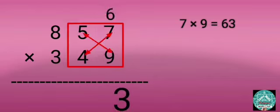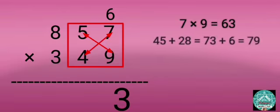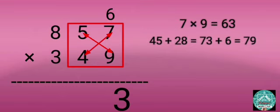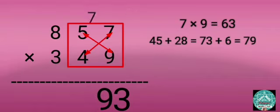Step 2: Multiply 5 by 9 and 4 by 7, then add: 45 plus 28 equals 73. Then add 73 and 6 that's carried forward: 73 plus 6 equals 79. Write 9 before 3 and carry forward 7.